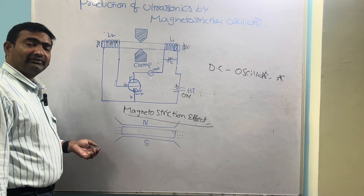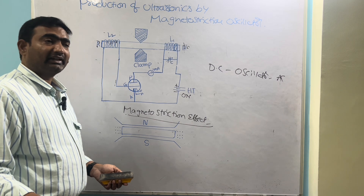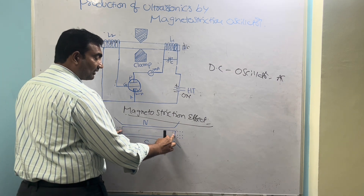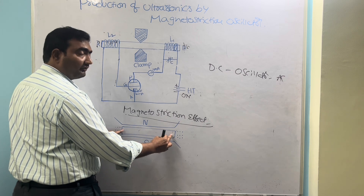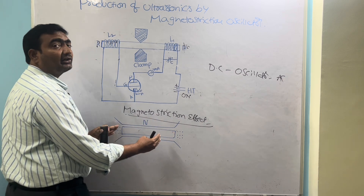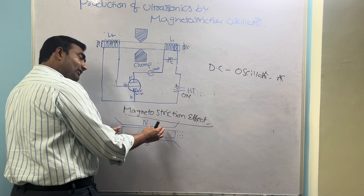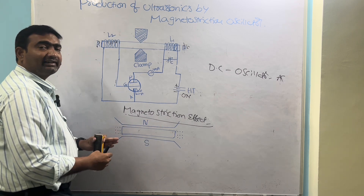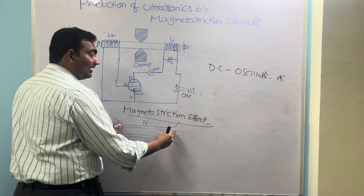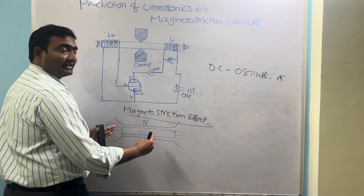What is the magnetostriction effect? When a ferromagnetic material — maybe iron, nickel, or cobalt — is taken in the form of a rod and placed under an alternating AC magnetic field, there is a change in its length. Sometimes its length increases, sometimes its length decreases.